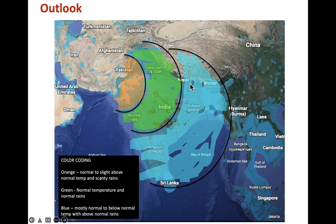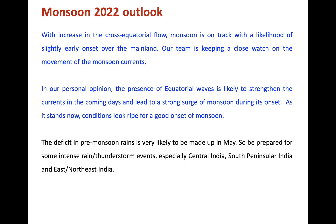This is the overall outlook we give for the month of May. Normal temperatures are likely to prevail in most parts of India, and the pre-monsoon rains will also make a comeback, which has been largely missing during March and April when highly deficit rainfall was observed. Things should change for the positive in the coming days.